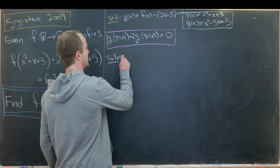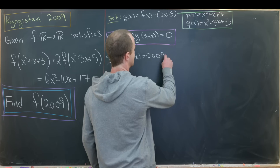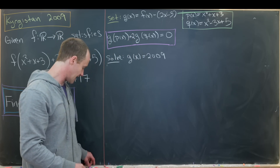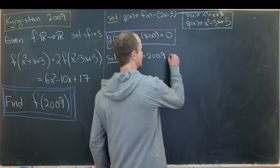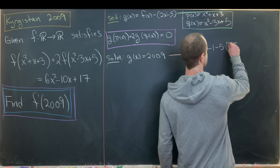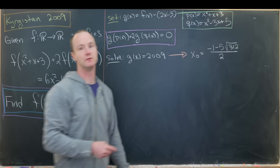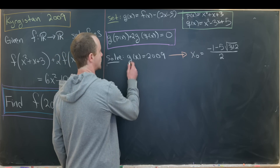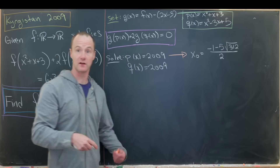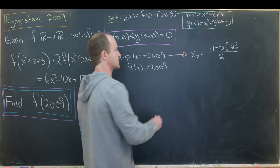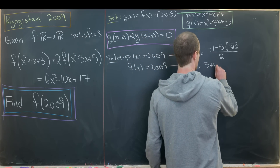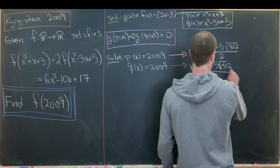Let's solve p(x) = 2009 first — that's just a quadratic: x² + x + 3 = 2009. One solution, which I'll call x₀, is (-1 - 5√312) / 2. Let's also solve q(x) = 2009, which is another quadratic solvable with the quadratic formula. That gives us a solution x₁ equal to (3 + 5√312) / 2.